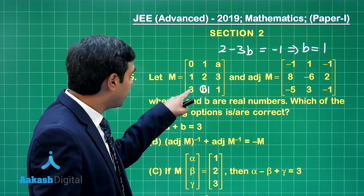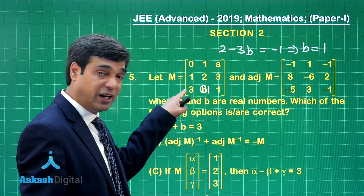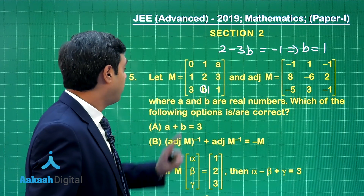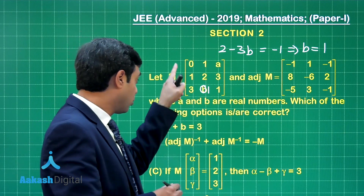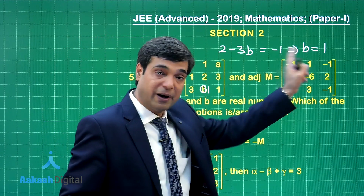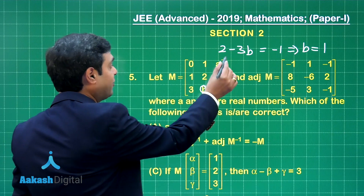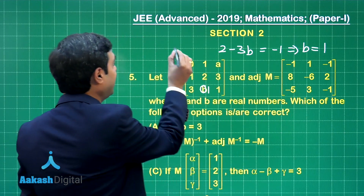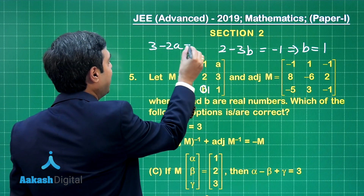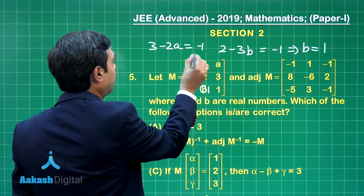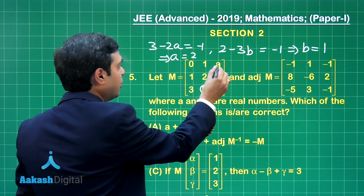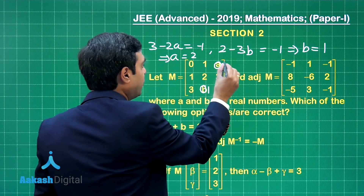When you talk about the cofactor for element 3, you will find the same value as minus 1 because when you go for the transpose, it is obtained as 3 minus 2A. From here, 3 minus 2A equals minus 1, which means A is equal to 2.